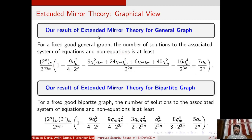In this paper, we have shown the extended mirror theory result for two types of graphs: the first type is for a general graph, and the second type is for a bipartite graph. For a fixed good general graph, the number of solutions to the associated system of equations and non-equations is at least 2^n falling factorial s, over 2^n to the power qm, times (1 minus some error term), where s is the number of vertices and qm is the total number of edges. Here qc is the total number of edges of the subgraph generated by removing the non-equation edges from graph g.